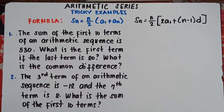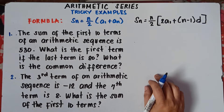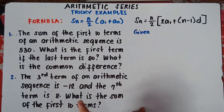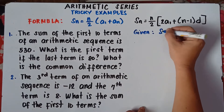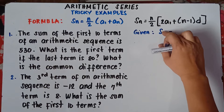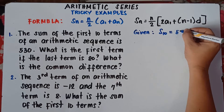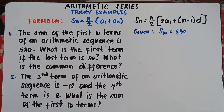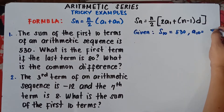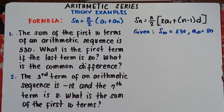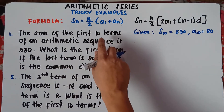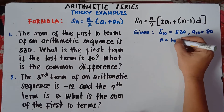Let's try number 1. When there's a problem, you need to understand it, then write down the given. We have: the sum of the first 10 terms of the arithmetic sequence is 530. So S of 10 equals 530. What is the first term if the last term is 80? So a sub 10 equals 80, and n equals 10.